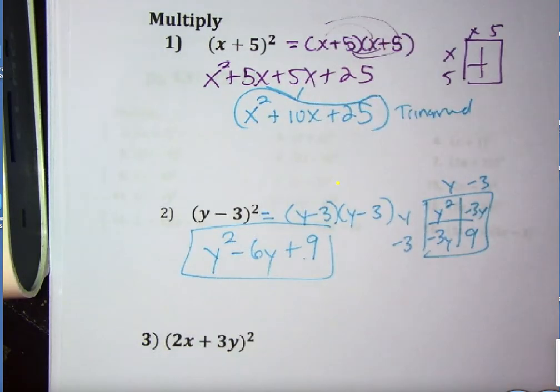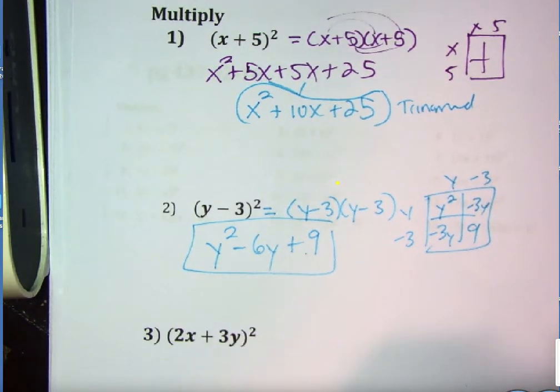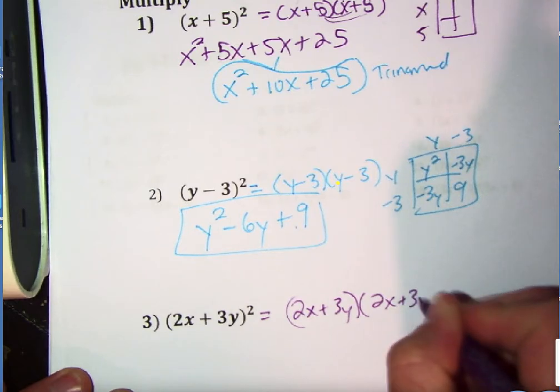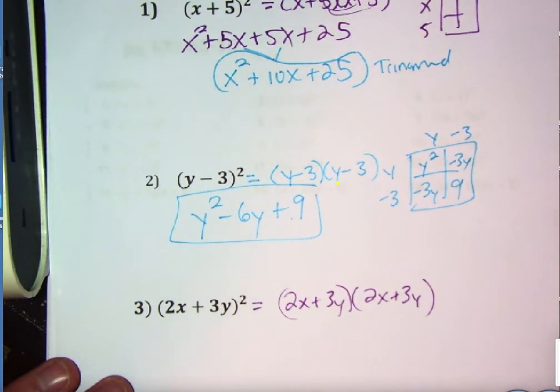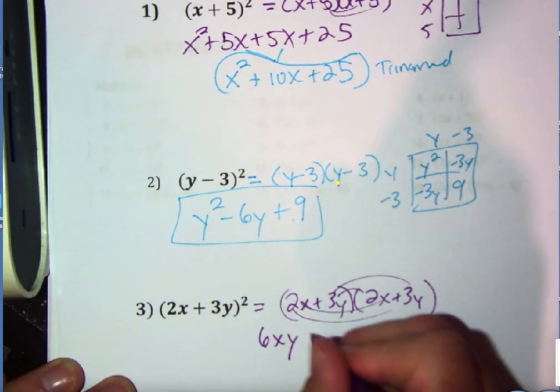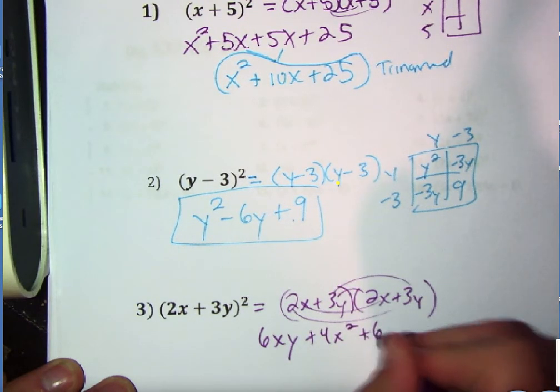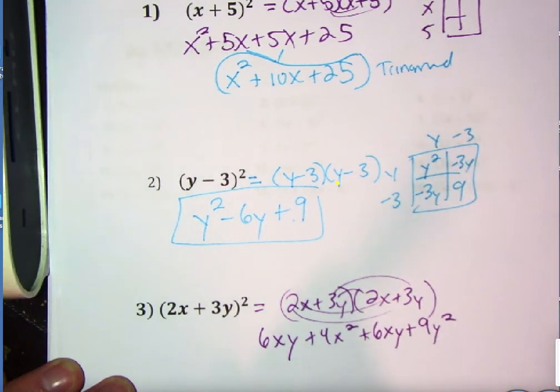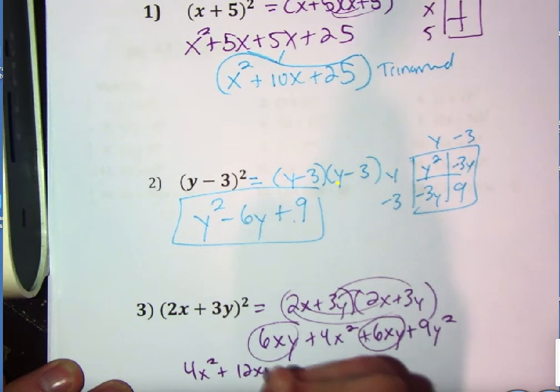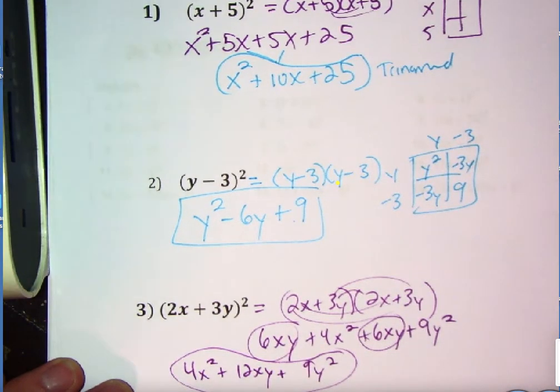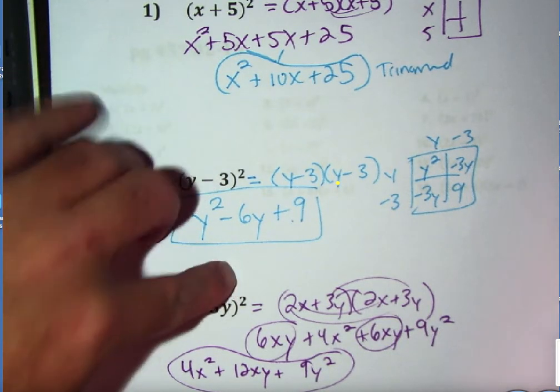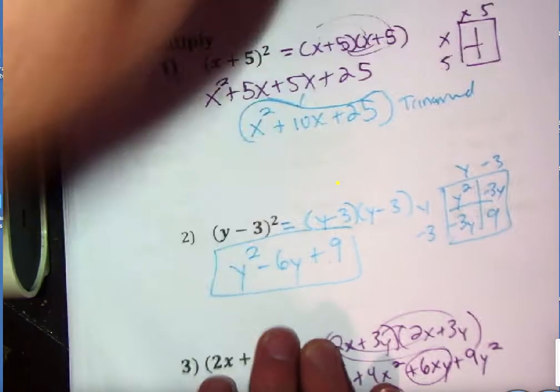The perfect square trinomials can be a little bit more complex even. 2x plus 3y squared. Same idea. 2x plus 3y times 2x plus 3y. And then we've got to take it one more step. Multiply. Do the distributive property. Are there any like terms? Yes and yes. So we get 4x squared plus 12xy plus 9y squared. There we go. So these perfect square trinomials are the same thing squared, same thing times itself. And when we do it and simplify, we get a trinomial.